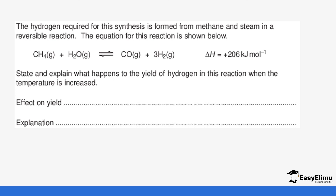Now let's look at a practice question to see if we've understood what we've learned. We covered the Haber process and the contact process, examining factors that affect equilibrium — concentration, temperature, and pressure — for both reactions. Now consider this: the hydrogen required for the Haber synthesis is formed from methane and steam in a reversible reaction, the equation for which is shown below. This forward reaction is endothermic.